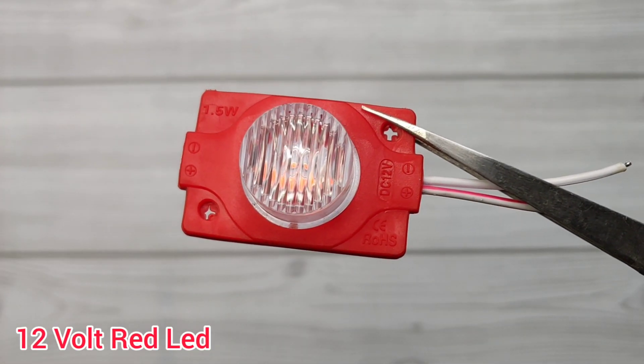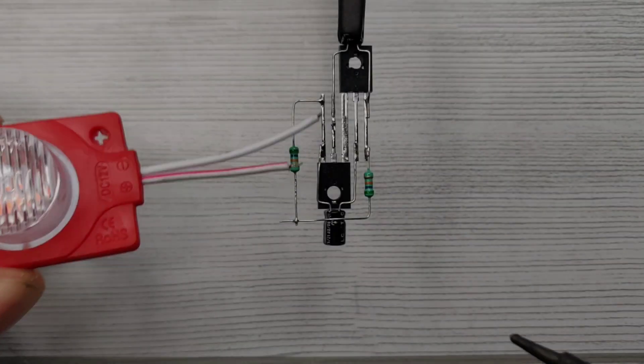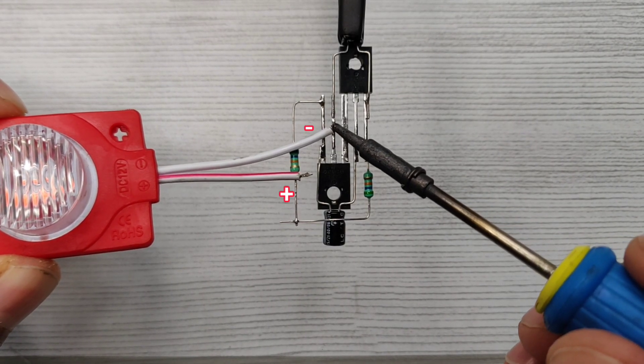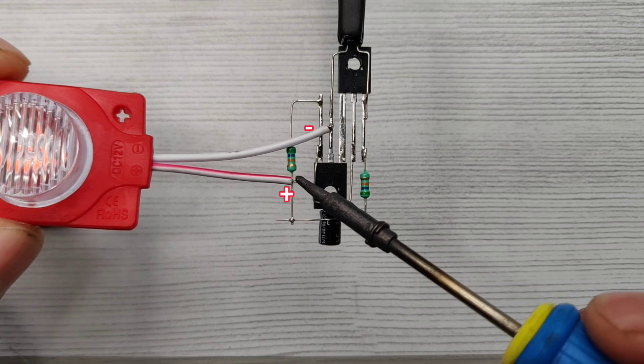I used this 12 volt red LED. Solder LED negative on collector of a transistor and positive on resistor joint.